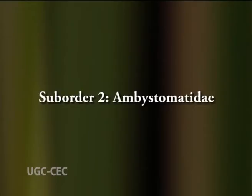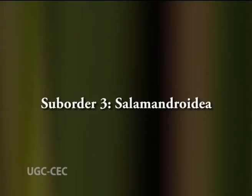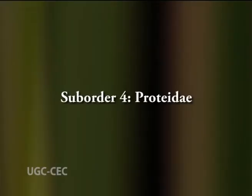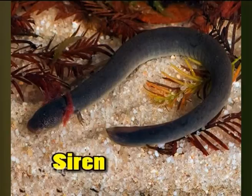Sub-order 3, Salamandroidea: eyelids present or absent; respiration through gills or lungs, but in some forms by skin — examples are Salamander, Amphiuma and Triton. Sub-order 4, Proteidae: body is depressed with permanent larval forms — examples are Proteus and Necturus. Sub-order 5, Sirenidae: body is slender eel type with permanent larval forms — example is Siren.